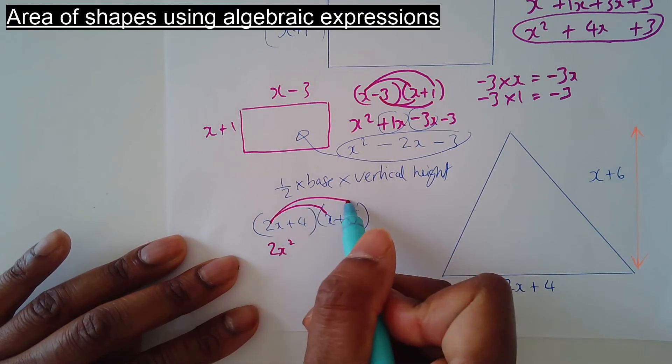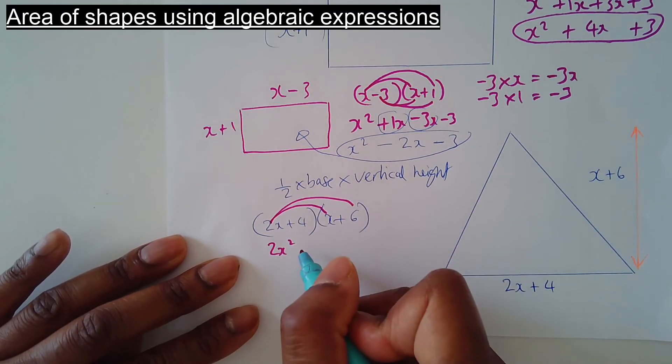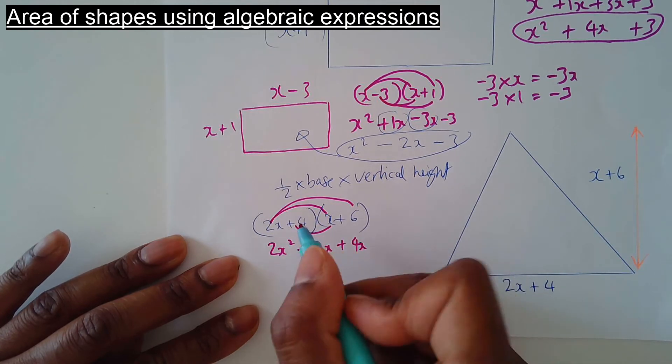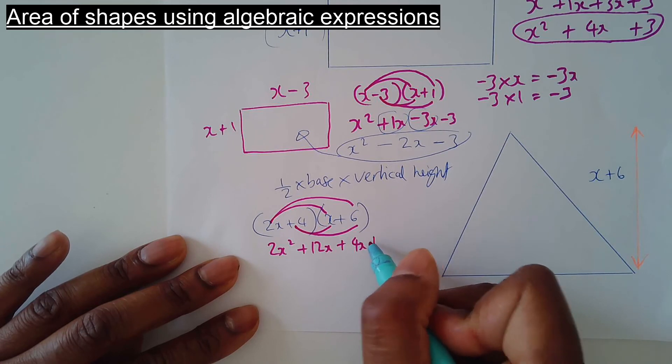2x times 6 is 12x. 4 times x is 4x. 4 times 6 is 24.